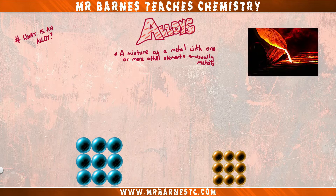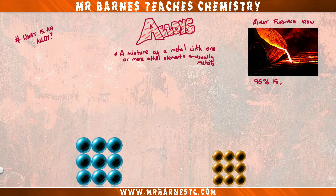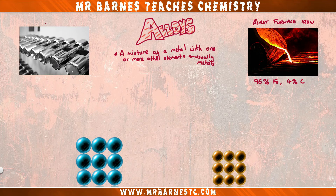For example, iron from a blast furnace is usually 96% iron and 4% carbon, while stainless steel is 82% iron and 18% chromium.